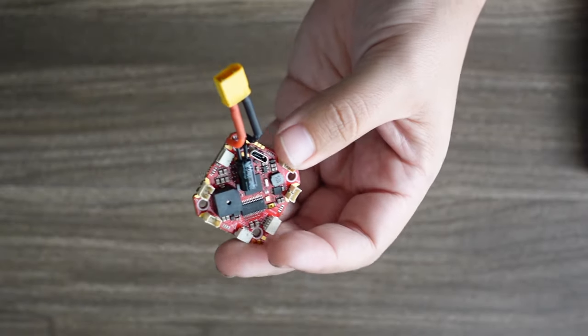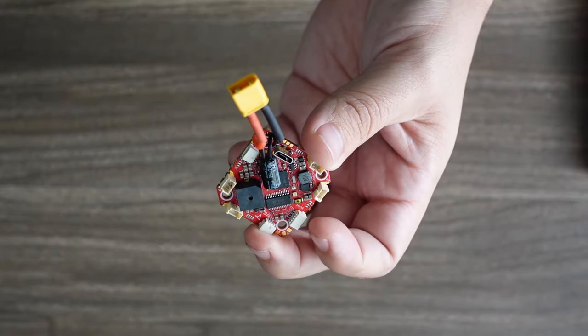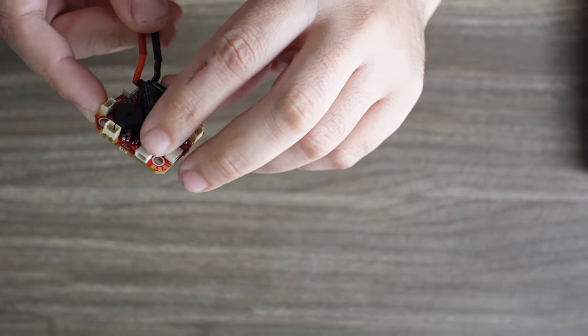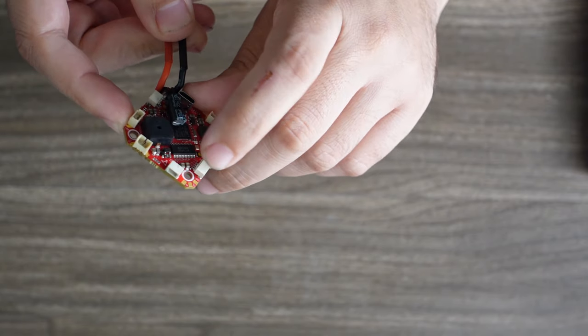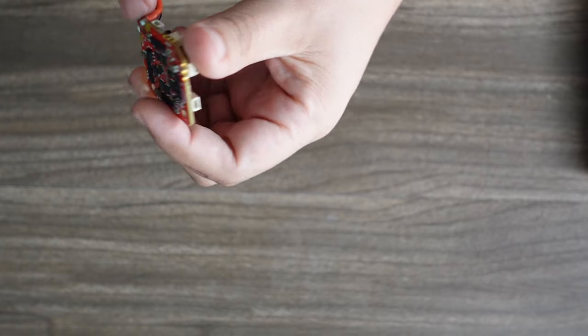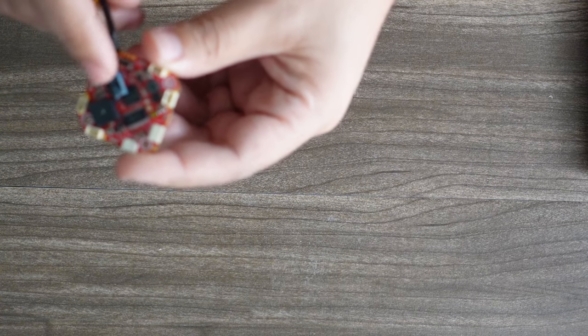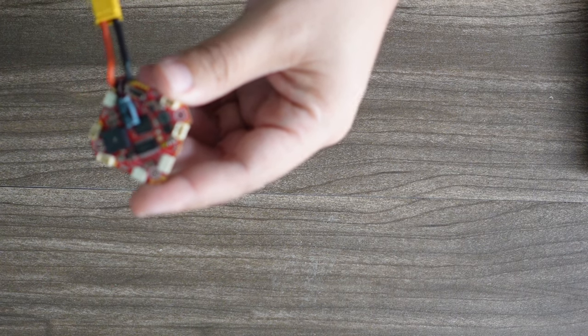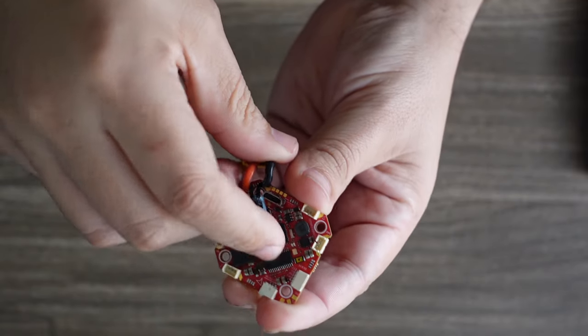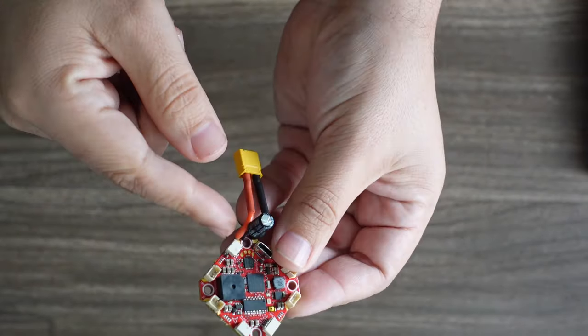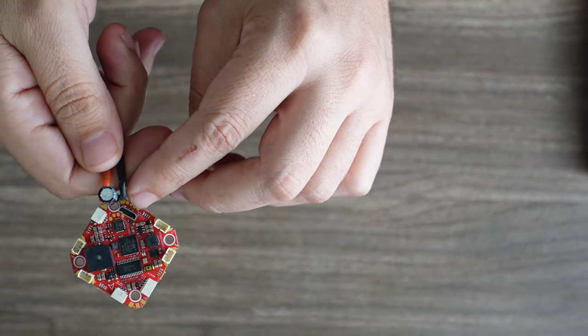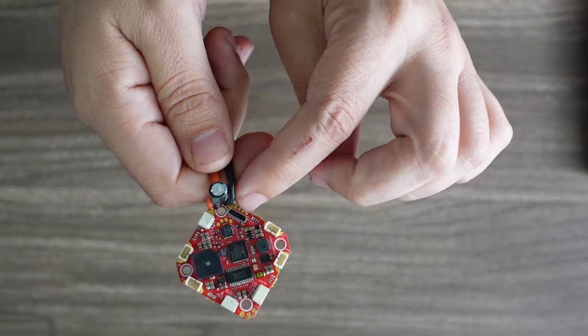And then of course your connectors for your camera system are right up here. You got your camera right there, over here you have your video right there, and then here is where you would have your receiver down in the back if you're using SBUS. If you're not using SBUS, you're gonna want to lift the capacitor right here and there are four pads down here that you could use. You could also use these pads right